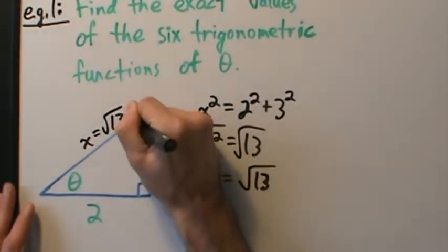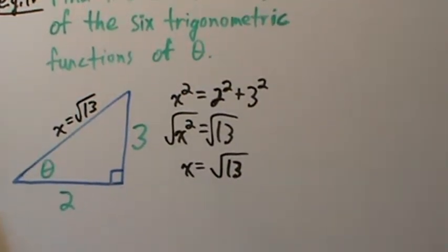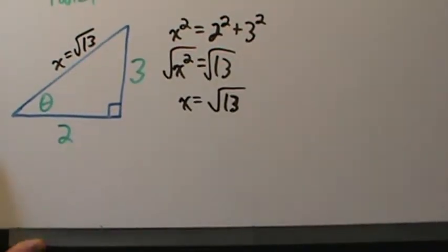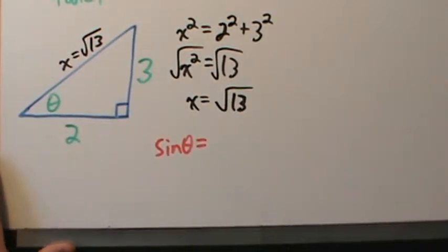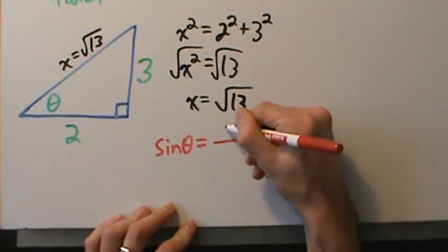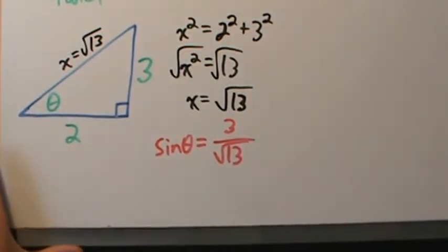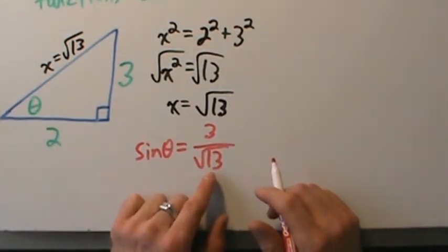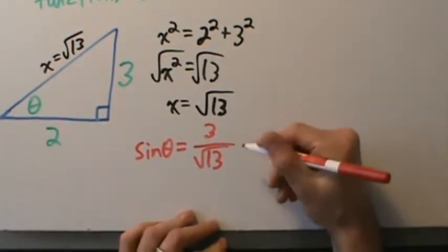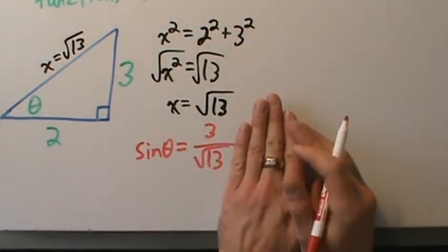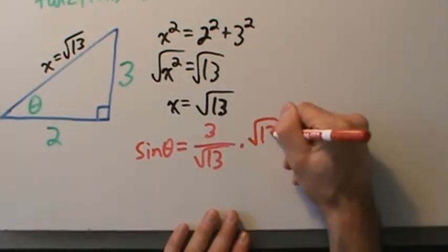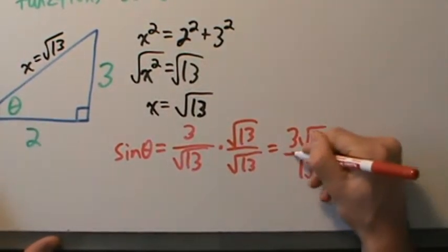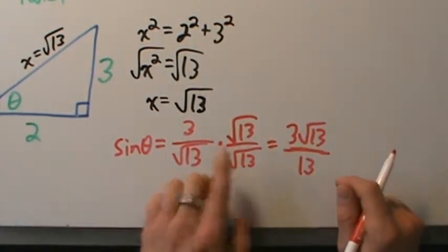So the hypotenuse equals the square root of 13. Now let's find the trig values. Sine of theta is opposite over hypotenuse, so that's 3 over root 13. I don't require students to rationalize the denominator, because if you rationalize here it's not really simpler. But if you have to, multiply top and bottom by root 13, and you get 3 root 13 over 13.